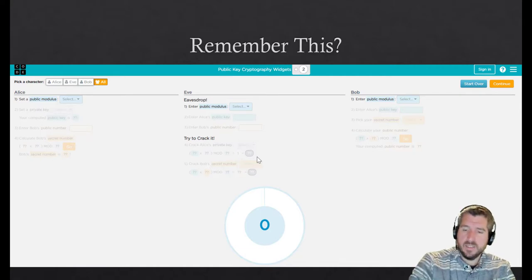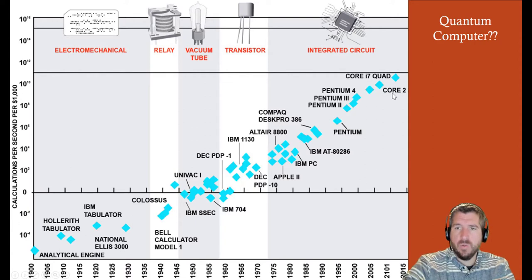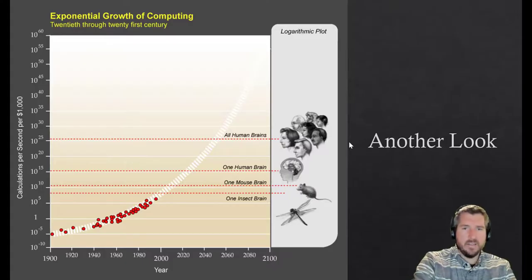So if we go back to sort of the chart we saw before, perhaps we'll get a little bit of this continuation of this line with regular computing and regular computer chips. But maybe the quantum computer is where we go from here and where we get that huge leap in calculation potential and raw computing power.